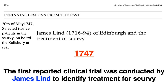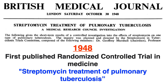Going back into history, in 1747 James Lind was the person who did the first clinical trial on scurvy. He allocated 12 patients with scurvy and treated them with medical management. A well-known reported study is from 1948 on the use of streptomycin treatment for pulmonary tuberculosis.